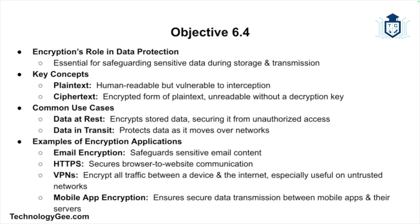To wrap up: encryption plays a crucial role in protecting sensitive data both when it's stored and when it's transmitted. Plain text is human readable but vulnerable to interception; ciphertext is what we get after encryption, unreadable without the right decryption key. For data in transit: email encryption secures email content, HTTPS ensures safe communication between browsers and websites, VPNs encrypt all traffic protecting users on untrusted networks, and mobile application encryption secures data transmitted between mobile applications and their servers.